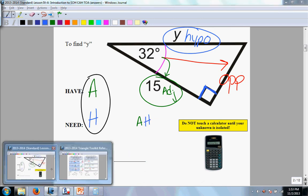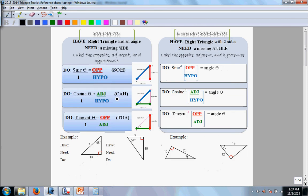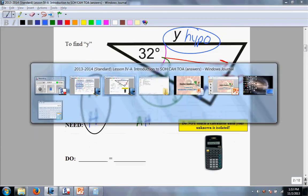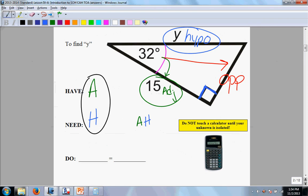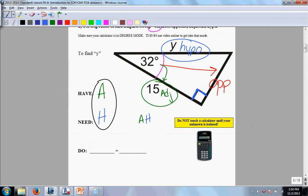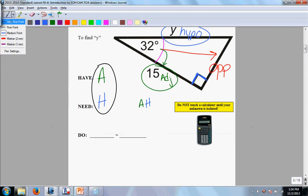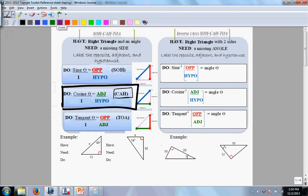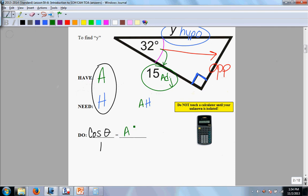So you look on your trig reference card and you figure out what goes with AH, and AH goes with cosine. So we're going to write exactly this equation under our do. So we write cosine of our angle that we're working with, cosine theta over 1 equals, watch carefully, it's always going to be adjacent over hypo. So it's adjacent over hypo. That is our ratio. You always write the ratio first.